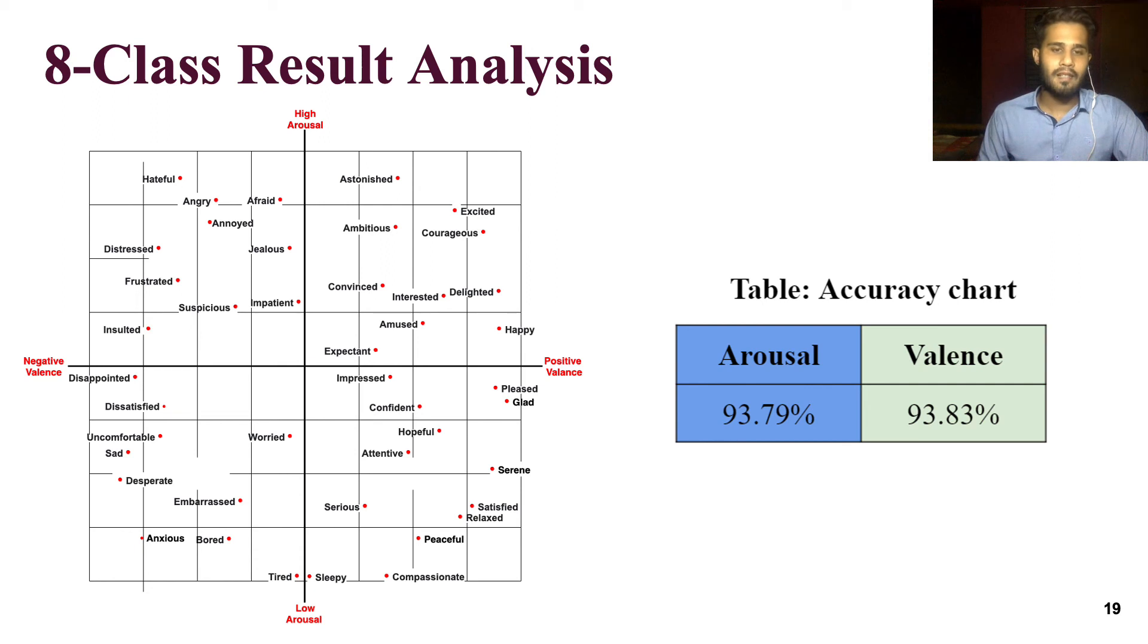Which emotions were classified into four states in binary classification, those emotions are divided into 64 states in 8 class classification. This method is proposed by us. And for this, we have achieved more than 93% accuracy.